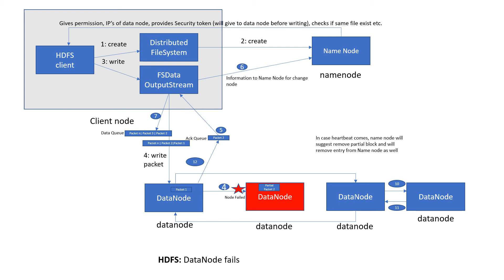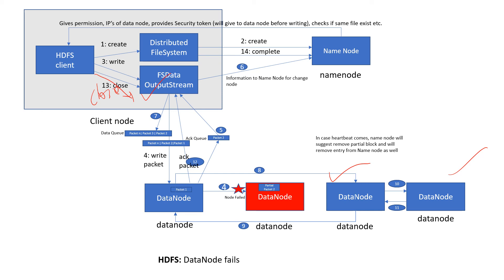As you can see in this diagram, it is creating a pipe here with the data node, and then it will create a third copy on another data node. This way the operation will get completed. Once the operation completes — same as what we discussed previously — information will go to the output stream, the output stream will close successfully, and then finally it will send the complete information to the name node. The name node will have all this information.